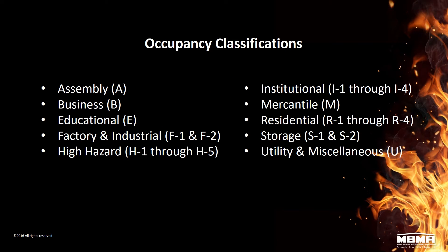The code addresses these goals by first identifying several occupancy groups, then based on the heights and areas of the building, requiring different fire resistance ratings for those constructions. The IBC occupancy definitions include: assembly, business, educational, high hazard, and others. Abbreviations used by the code include A for assembly, B for business, and M for mercantile.